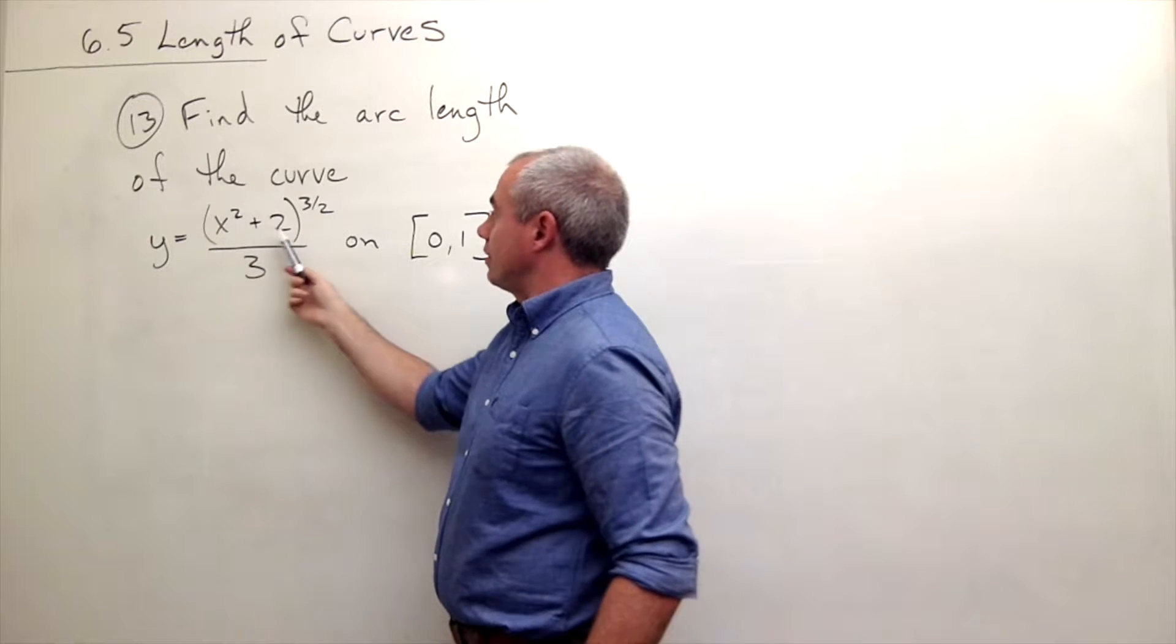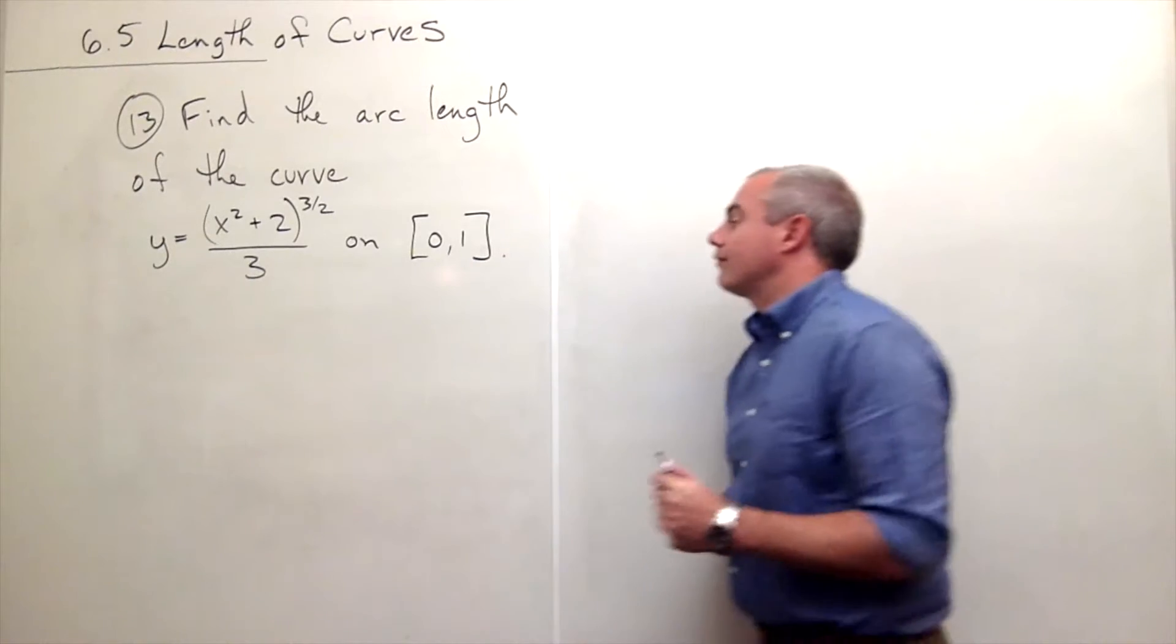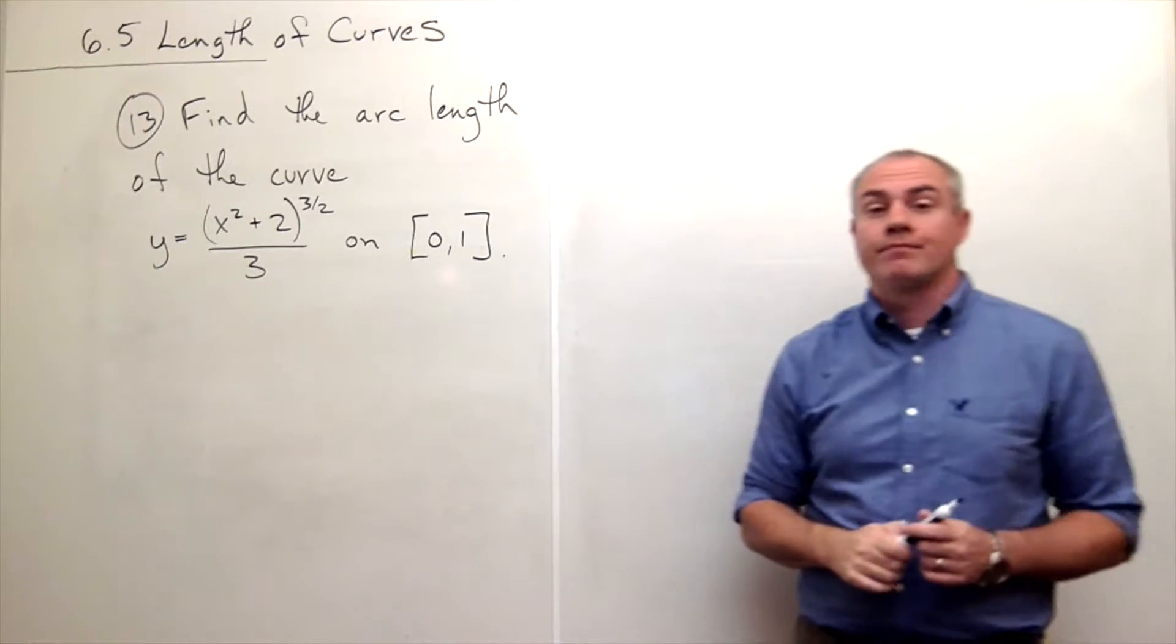Well, x squared plus 2 to the 3 halves over 3, on the interval from 0 to 1.